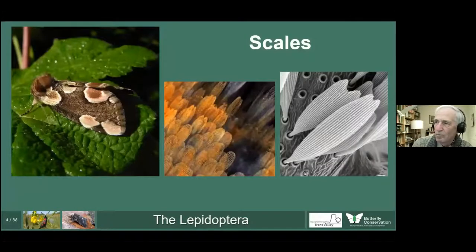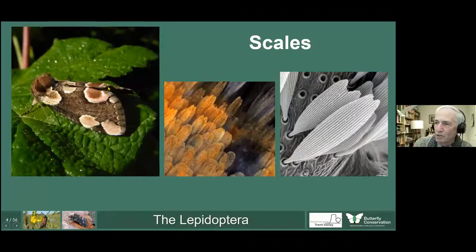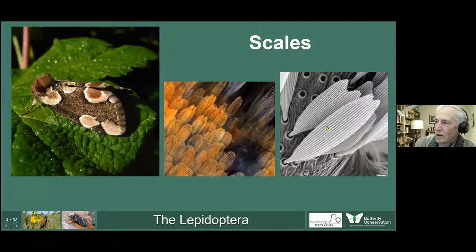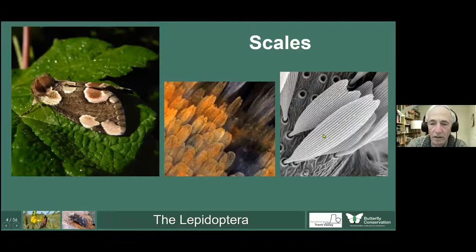Moths and butterflies are members of the Lepidoptera, characterized by having scales on their wings. These scales fit like tiles on a roof. When you're looking at a moth like this Peach Blossom, you're looking at coloured scales — you can't see the actual wing membrane, which is covered by a layer of scales. Some scales have lots of ridges with holes between them where pigment granules reside, and quite often the structure of these ridges gives some of the metallic colouring on moths and butterflies through an interference effect.